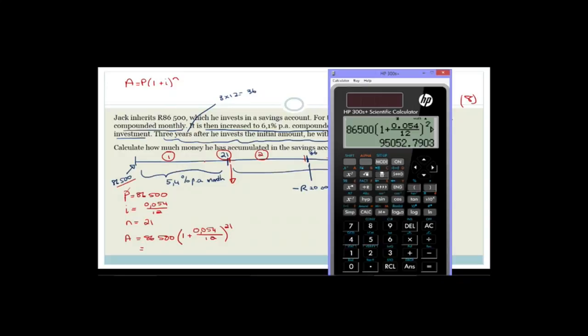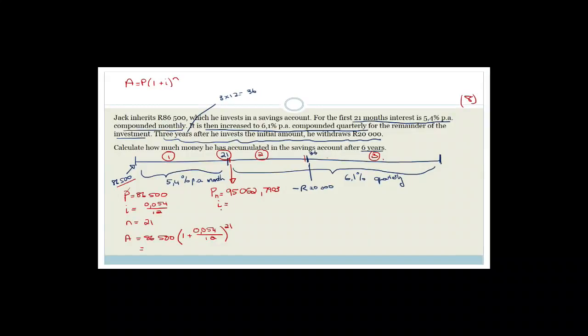Let's compute: 86,500 × (1 + 0.054/12)^21. Enter 86,500 times (1 + fraction 0.054 over 12), close bracket, to the power of 21, equals. We get 95,052.7903. Don't round off yet — this becomes the new principal. The interest rate now changes to 6.1% per annum compounded quarterly, so i = 0.061/4.